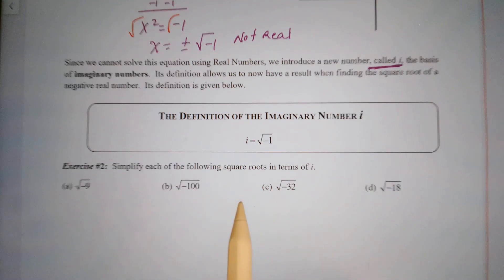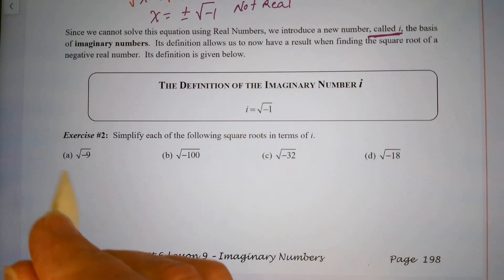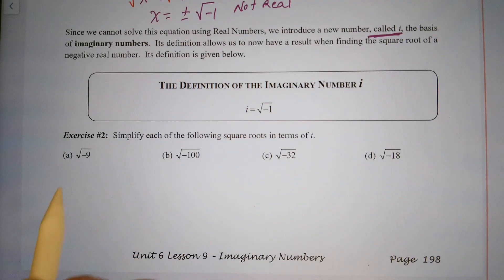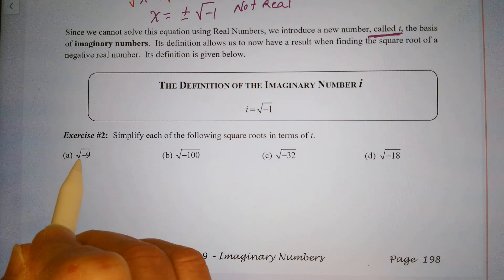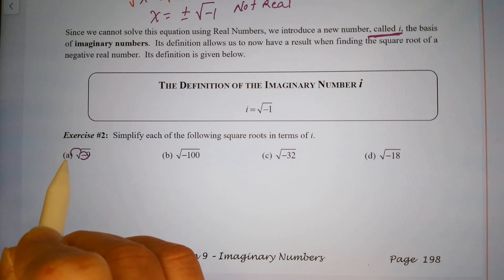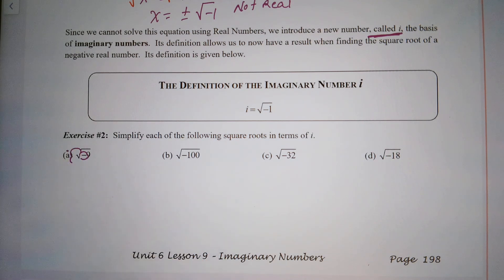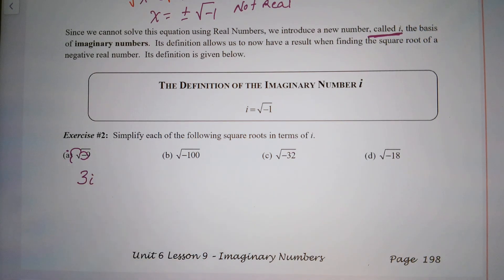Simplify each of the following square roots in terms of i. When you have the square root of a negative, just take that negative out — it comes out as i. So for the square root of negative nine: the square root of nine is three, so the answer is 3i.